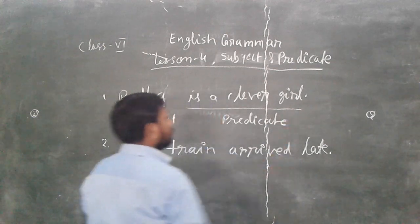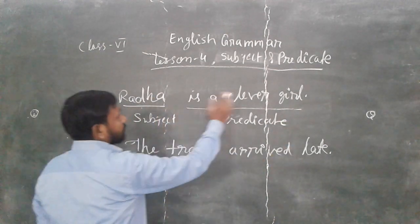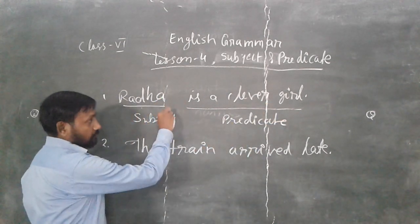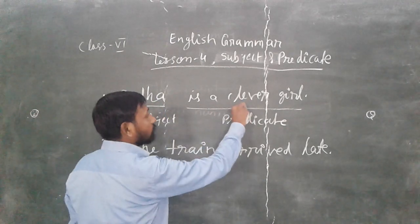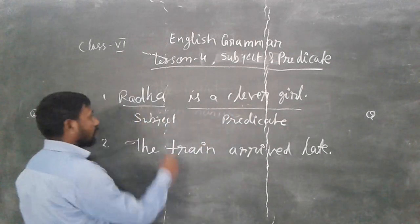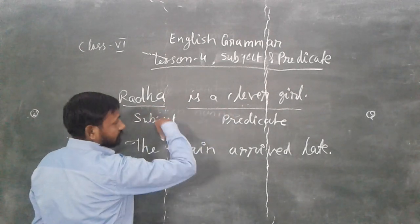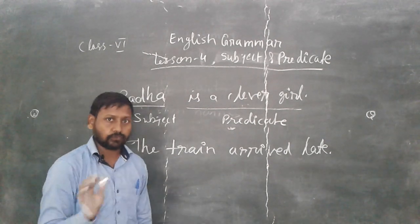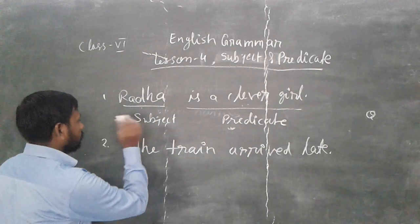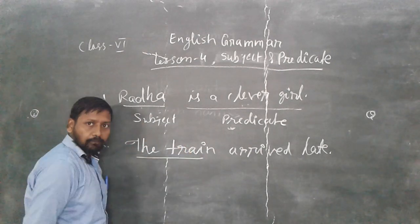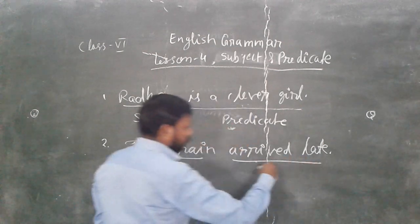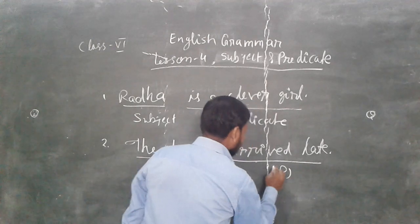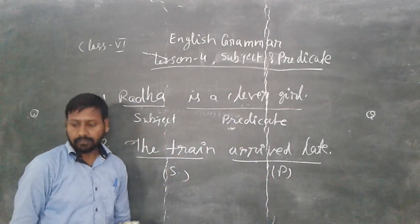Why? Because Radha is a clever girl—is a clever girl. So about Radha we told one thing, that she is a clever girl. So when we tell something about the subject, we call it predicate. And subject is that which is the name of a person or thing or someone doing the work. Here the train is the name, and arrived is the verb. So verb and the words after it, this is our predicate.